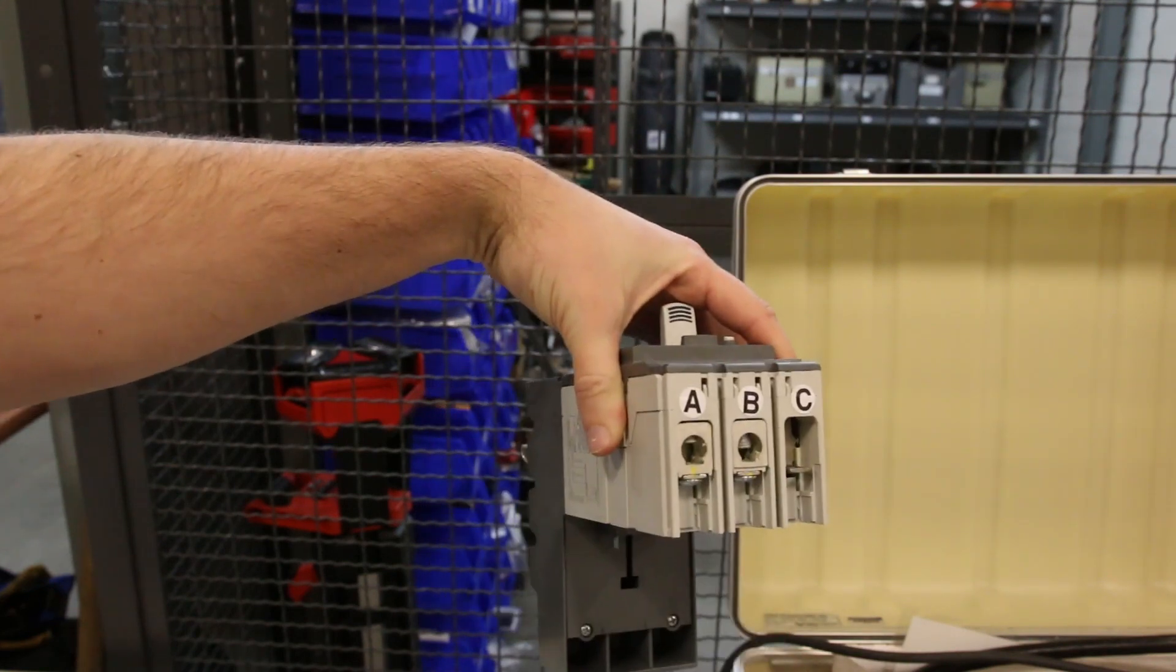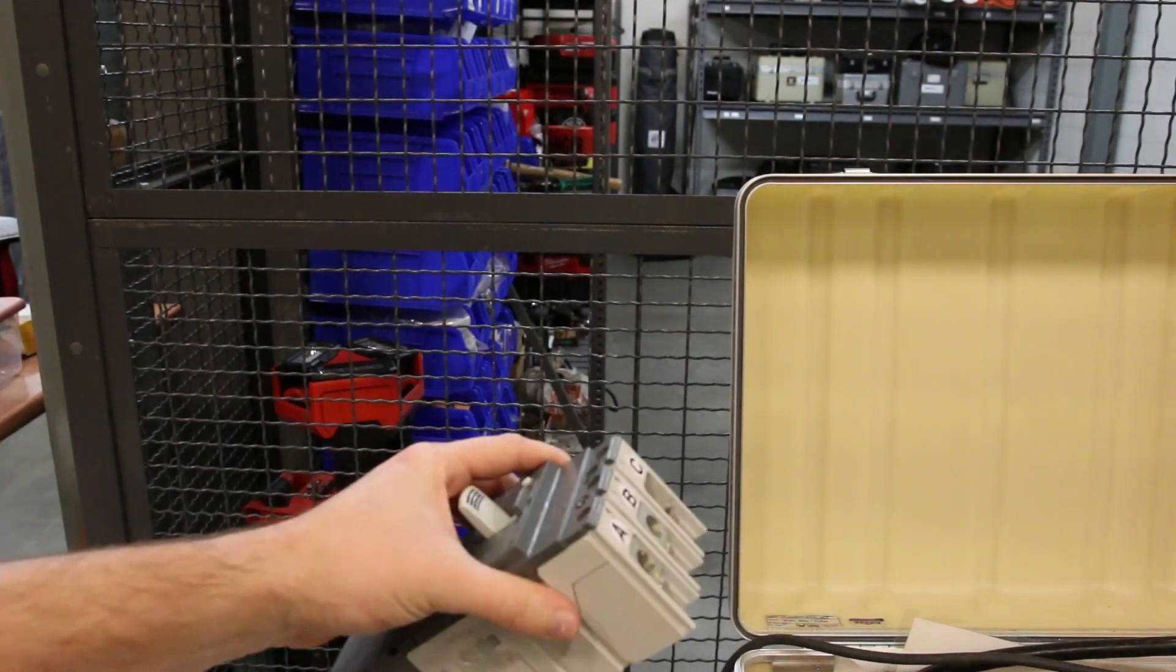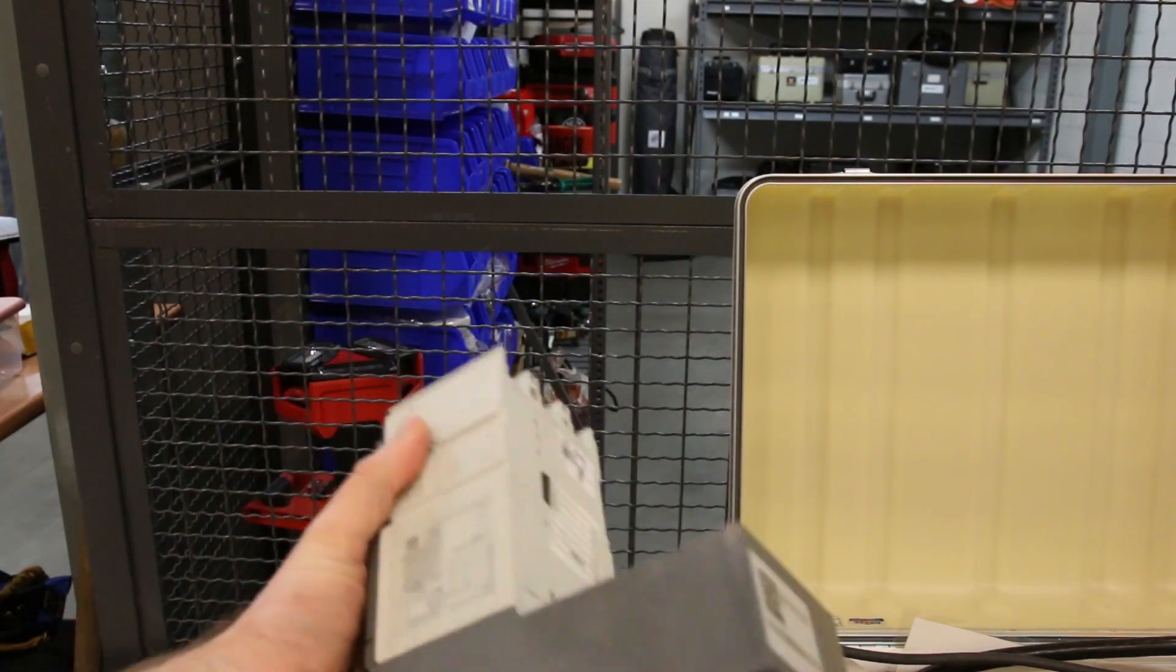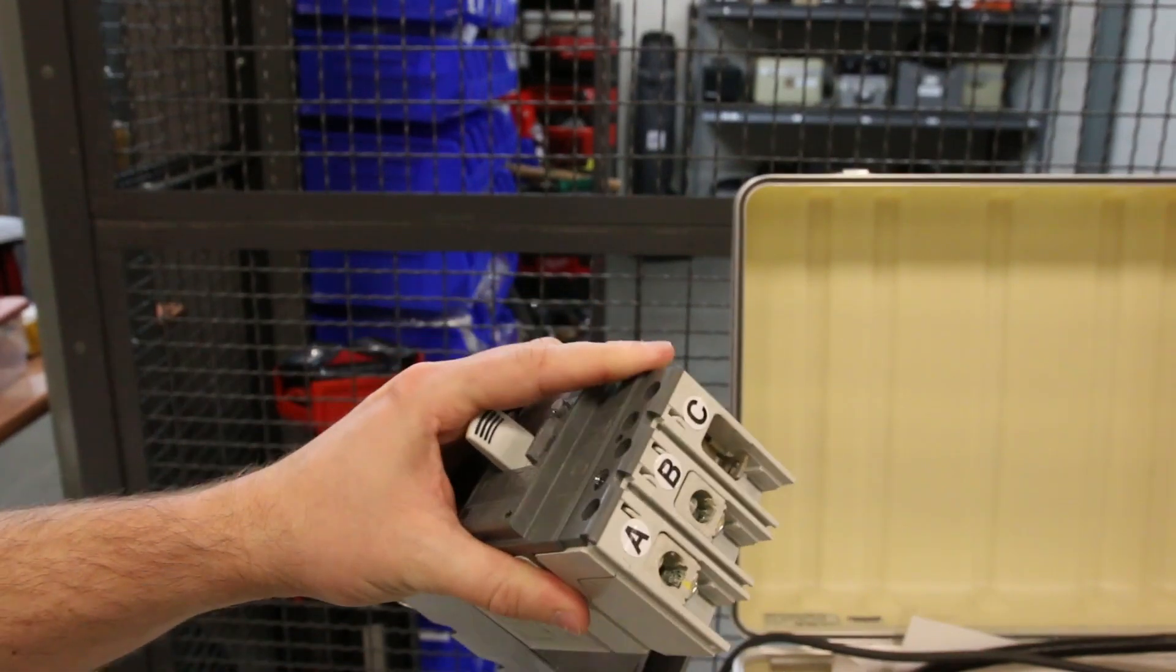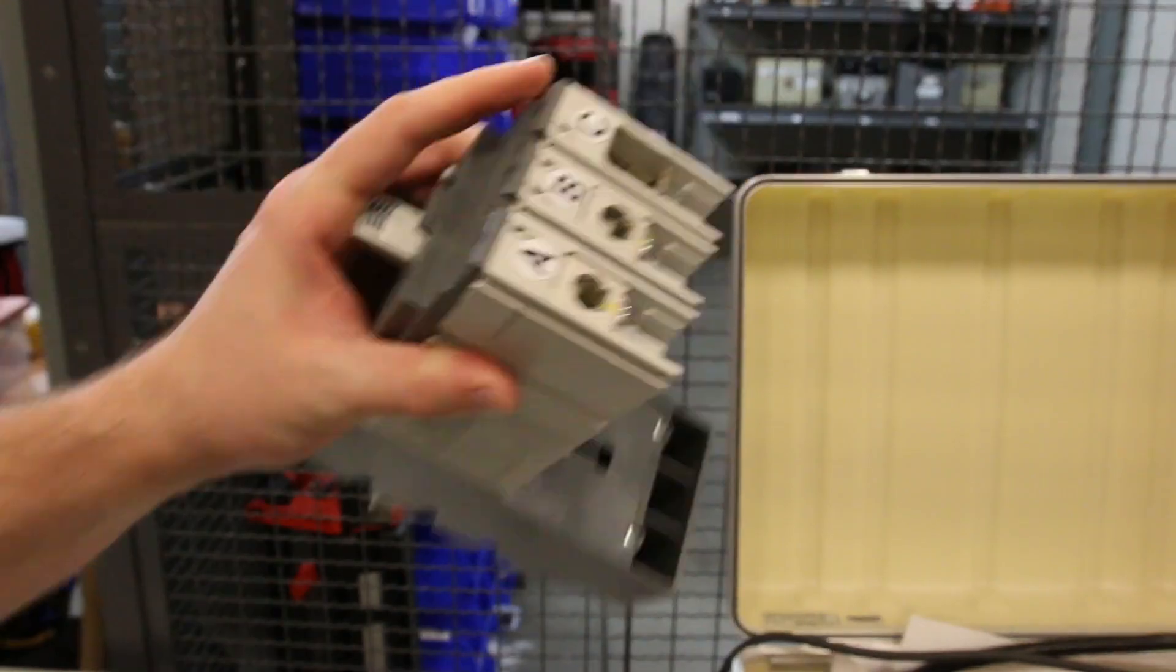So what we're going to do is we're going to take one of these and we're going to back it off. See, this one's nice and tight. We're going to back this off exactly one quarter turn. And then we're going to hook the current back up and I'm going to try and trip it at roughly 30 amps.